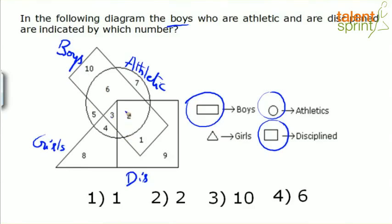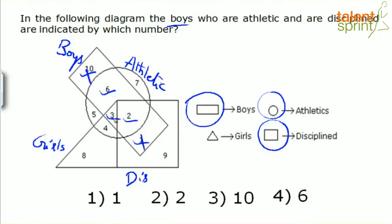Now it should also be inside square because they must be disciplined. What is inside square? Only 2 is inside square. Region 3 is not inside square, so 3 is eliminated. Region 6 is also eliminated. What is left is 2. So the answer is 2 — region 2 is inside rectangle, inside circle, and inside square. Boys who are athletic and disciplined is shown by 2, which is option 2.